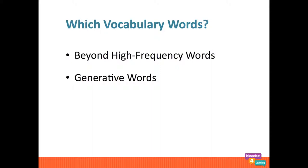We know that vocabulary is the single biggest predictor of comprehension, but which words are the words that really make a difference? The words chosen include high-level vocabulary that can be used across the curriculum, words like inundate, inhabitant, and foliage. And words that generate other words — for example, multicolored leads to words like multitask, multigrain, and multicultural.